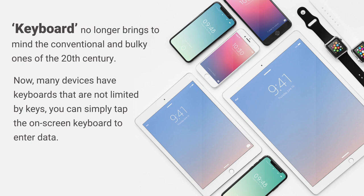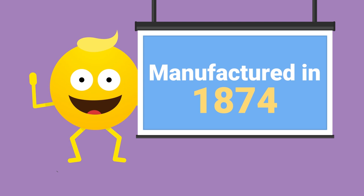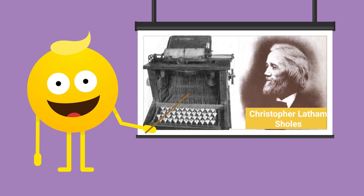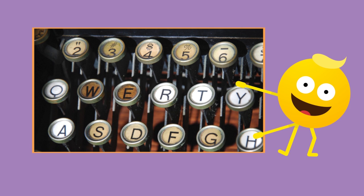The typewriter's history predates the QWERTY layout. The first typewriter was manufactured in 1874 by Remington & Sons and it was designed by Christopher Latham Schulz with Samuel Suley, James Densmore and Carlos Glidden, and applied for a patent in 1868. He arranged the keys of the typewriter in the QWERTY format, and even today the format remains the same.